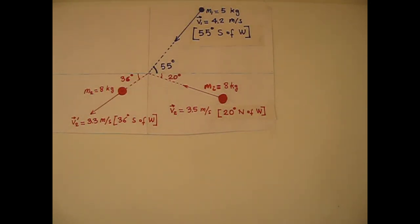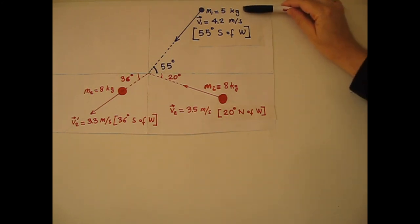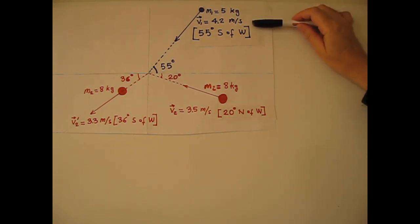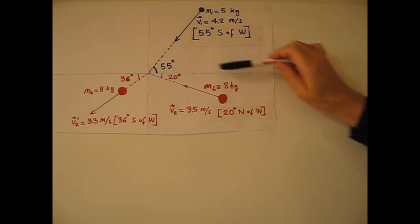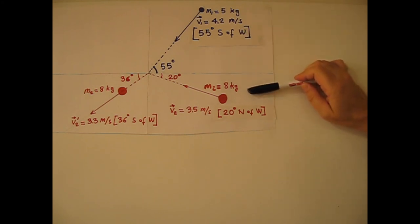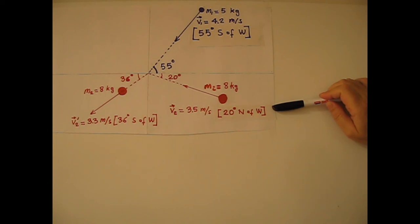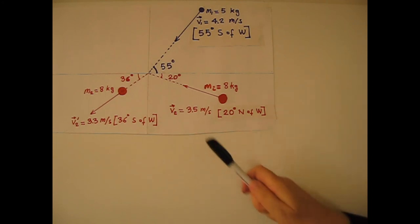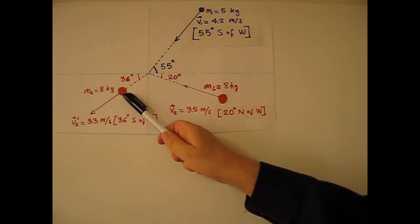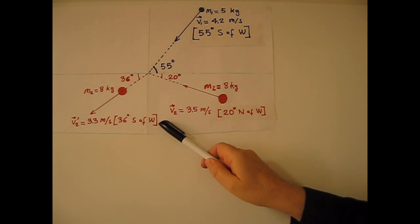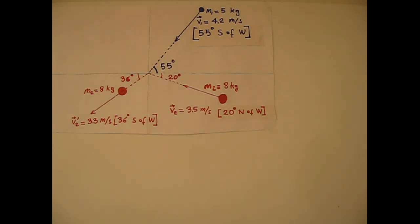In this video I am going to explain two-dimensional collisions by giving an example. A 5-kilogram marble with this velocity collides with the 8-kilogram marble with this velocity. Just after the collision, the 8-kilogram marble travels with this velocity. First question: find the velocity of the 5-kilogram marble immediately after the collision.